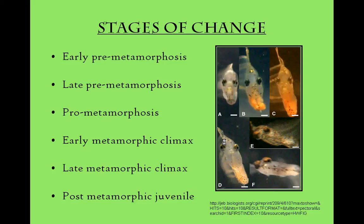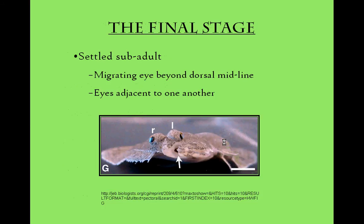The final stage before reaching adulthood is captured in picture F. The larvae are now referred to as post-metamorphic juveniles. The eye has migrated to the dorsal midline, and the fish swims with an 80 to 90 degree tilt. The final stage of metamorphosis shows the fish now referred to as a settled sub-adult, where the migrating eye has moved from the dorsal midline to become adjacent to the corresponding eye. The information regarding the metamorphosis process was supplemented by the Department of Embryology at the Carnegie Institution of Washington.